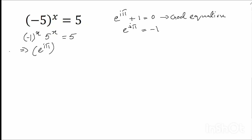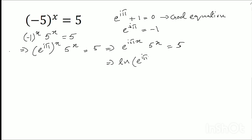So I am putting in here e to the power i pi in place of minus 1. So e to the power i pi, to the power x, into 5 to the power x equals to 5. Taking log on both sides.